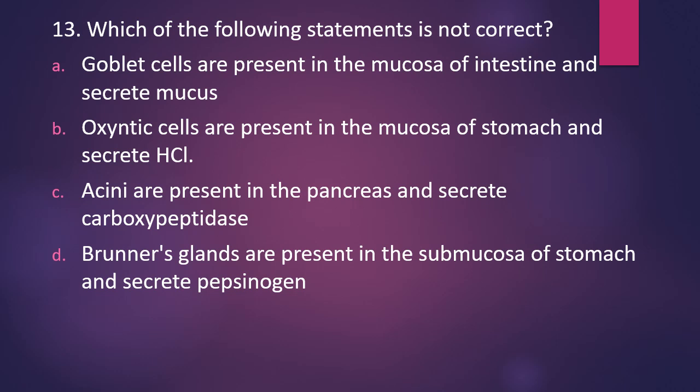Question number thirteen: which of the following statements is not correct? Goblet cells are present in mucosa of the intestine and secrete mucus. Oxyntic cells are present in mucosa of the stomach and secrete HCl. Acini cells are present in the pancreas and secrete carboxypeptidase. Brunner's glands are present in the submucosa of the stomach and secrete pepsinogen. The correct answer — option D is incorrect.